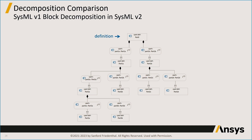In the SysMLv2 representation, the block corresponds to a definition element — say, part zero — as the part def at the top. That part def contains parts 1a and 1b, both with corresponding types corresponding to the blocks that would type the parts in SysMLv1. Part 1a is defined by the part def for part 1a, shown with colon notation. You continue stair-stepping down from block to part to block to part through the decomposition hierarchy.